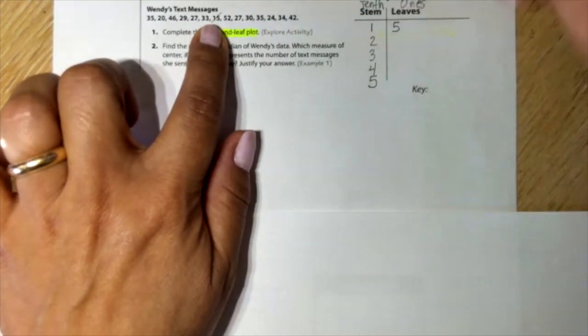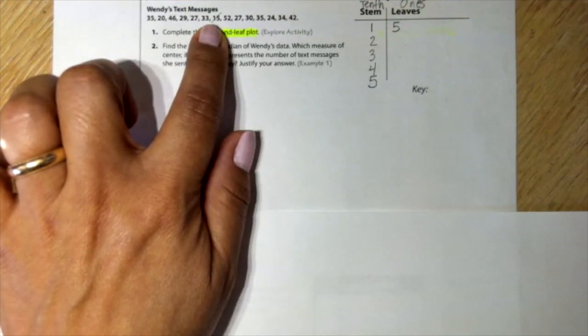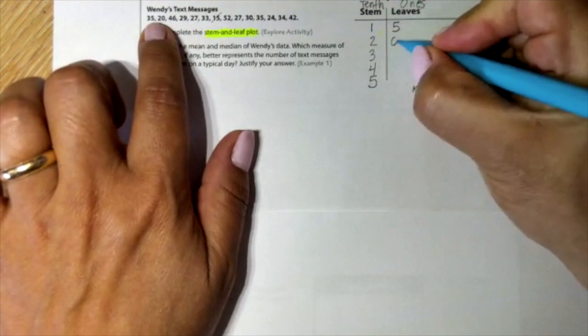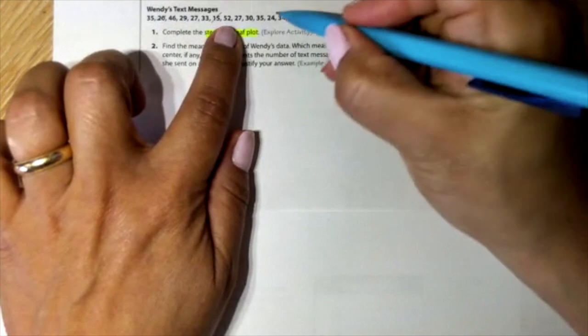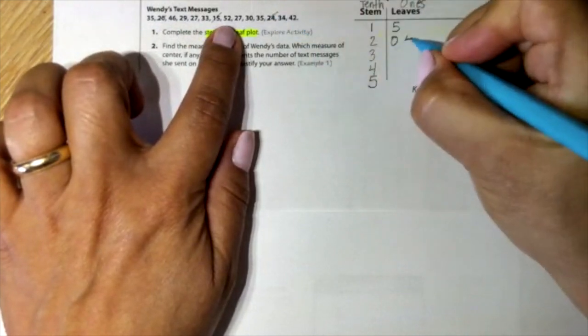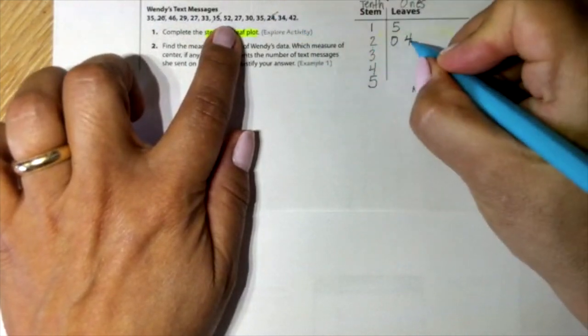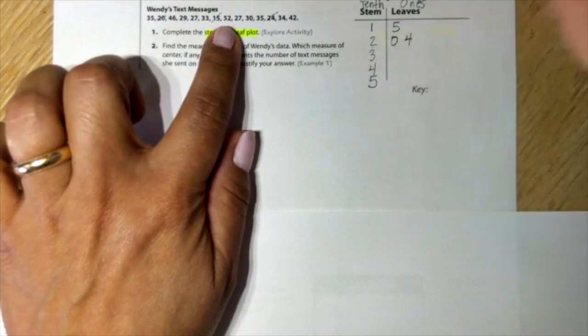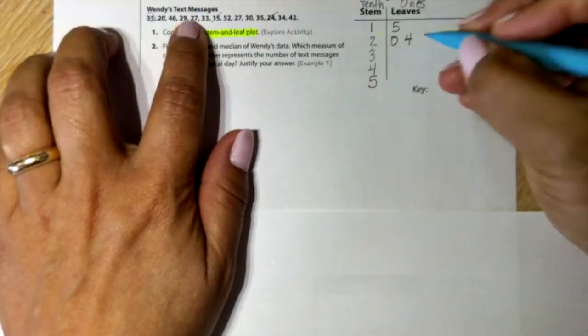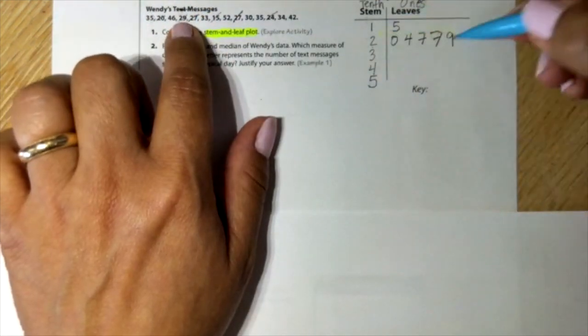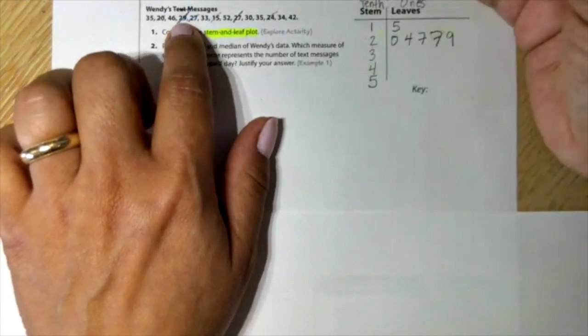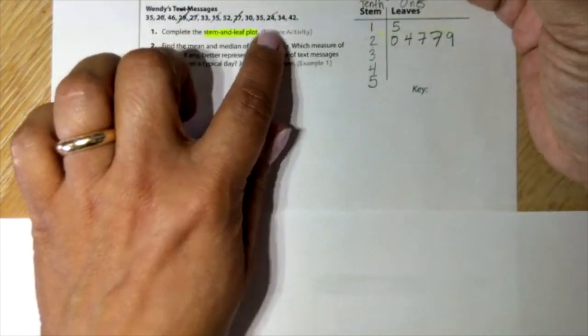So 15, we don't have any other. 20, two, zero, and the next one will be 24. So two and a four. Then the next one, 27, so a seven, cross it out. Then 29, two and a nine. That's it. No more 20s.